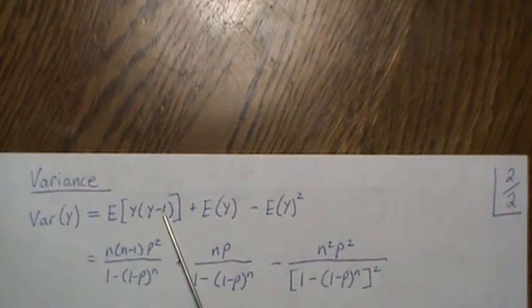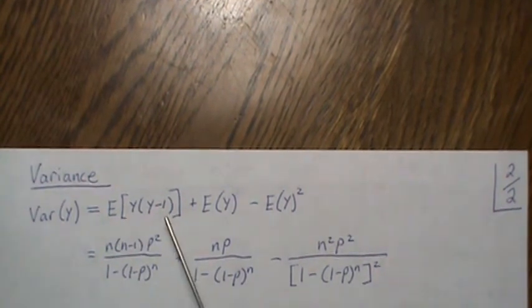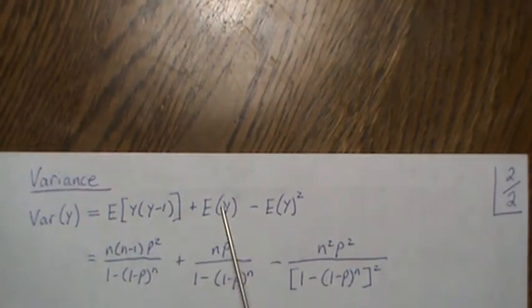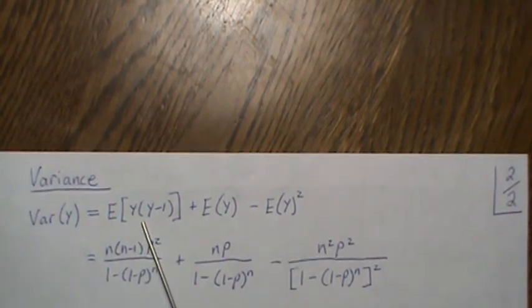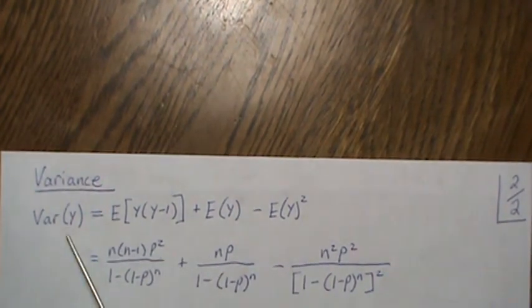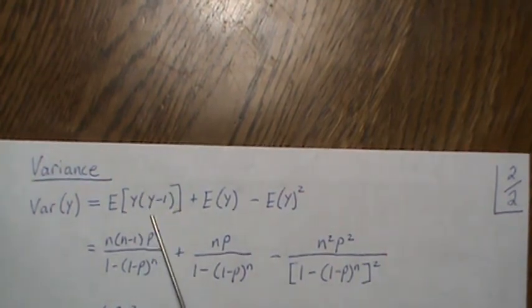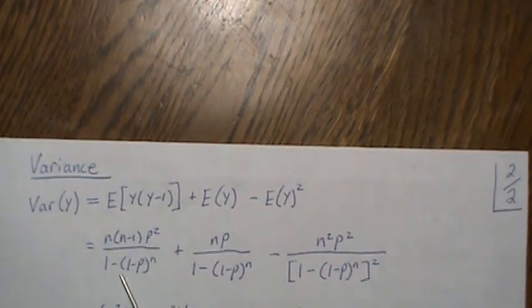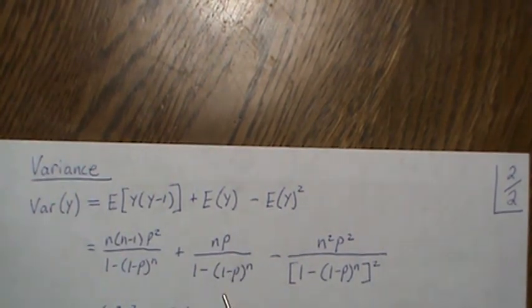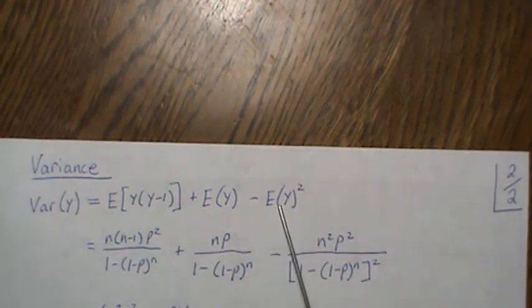If we look at this, that's Y squared minus Y. The expected value is a linear operator, so the minus expected value cancels with that, and we're just left with the expected value of Y squared minus the mean squared. This is the formula for the variance. Let's plug it in. We found this to be this fraction, and then the mean is np over (1 minus (1 minus p) to the n), and the mean squared is you square all the terms.